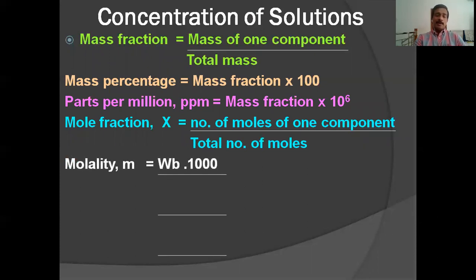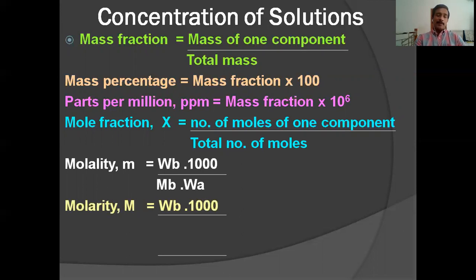Molality, represented by lowercase m, is equal to W_B × 1000 divided by M_B × W_A — where W_B / M_B is the number of moles of solute and W_A is the mass of solvent. So molality is the number of moles of solute per kilogram of solvent. Molarity is equal to W_B × 1000 divided by M_B × V, where V is the volume of solution — so molarity is moles of solute per liter of solution.